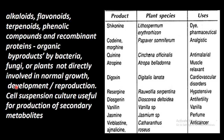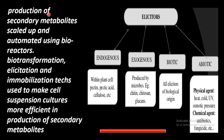In the cell suspension culture method, it is called secondary metabolite production. Production of secondary metabolites can be scaled up and automated. Using tissue culture, cells are placed in bioreactors to produce large quantities automatically. There are a few methods: biotransformation, elicitation, and immobilization — these are all techniques for the production of secondary metabolites.